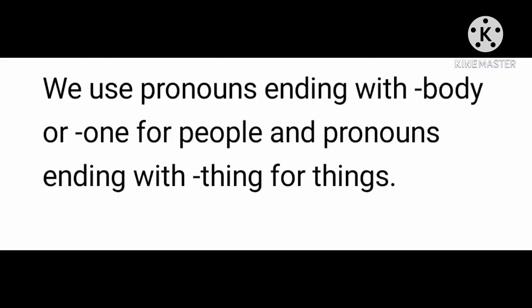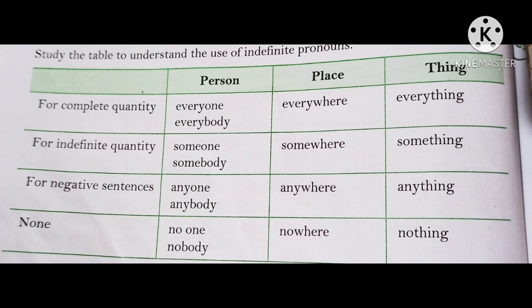We use pronouns ending with 'body' or 'one' for people, and pronouns ending with 'thing' for things. Here is a chart. For complete quantity: for a person, we use 'everyone' and 'everybody'; for place, 'everywhere'; and for thing, 'everything'. If the quantity is indefinite or not decided: for person, 'someone' or 'somebody'; for place, 'somewhere'; and for thing, 'something'. If the sentence is negative: for person, 'anybody' or 'anyone'; for place, 'anywhere'; and for thing, 'anything'. And if it is none at all: for person, 'no one' or 'nobody'; for place, 'nowhere'; and for thing, 'nothing'.